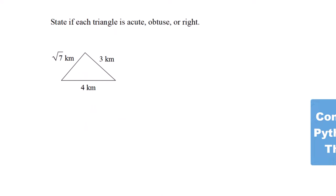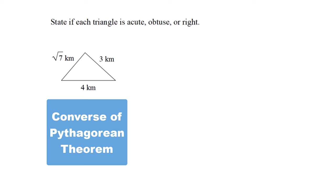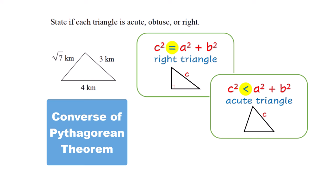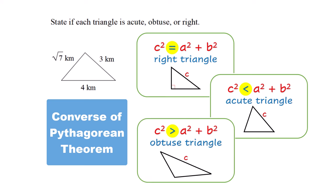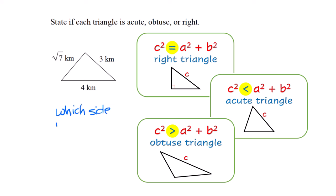This is the converse of the Pythagorean theorem. The regular theorem helps find sides in a right triangle. The converse tells you if it's a right, acute, or obtuse triangle. If c squared is less than a squared plus b squared, it's acute. If greater, it's obtuse.